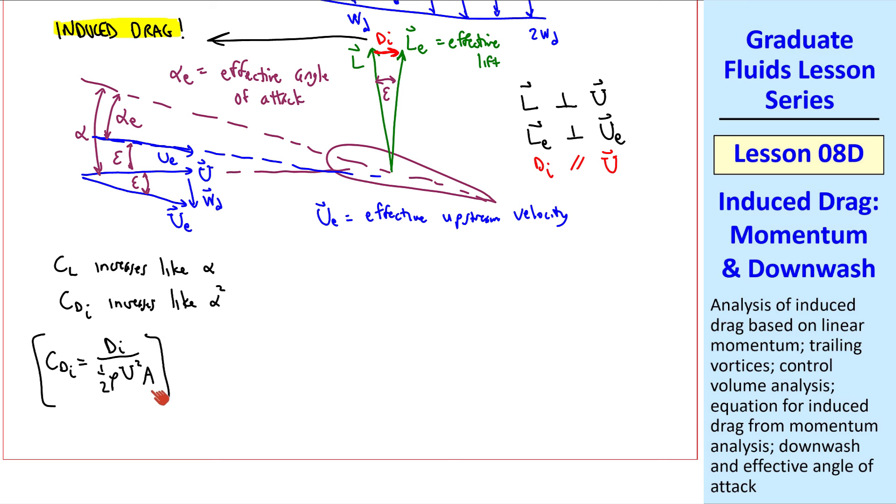This angle epsilon, by the way, increases as alpha increases. Finally, if we sketch Cl and CdI as functions of alpha angle of attack, for a non-cambered wing, Cl grows like alpha until it hits stall, where the flow separates, but CdI grows parabolically until stall. The induced drag is zero when the lift is zero.